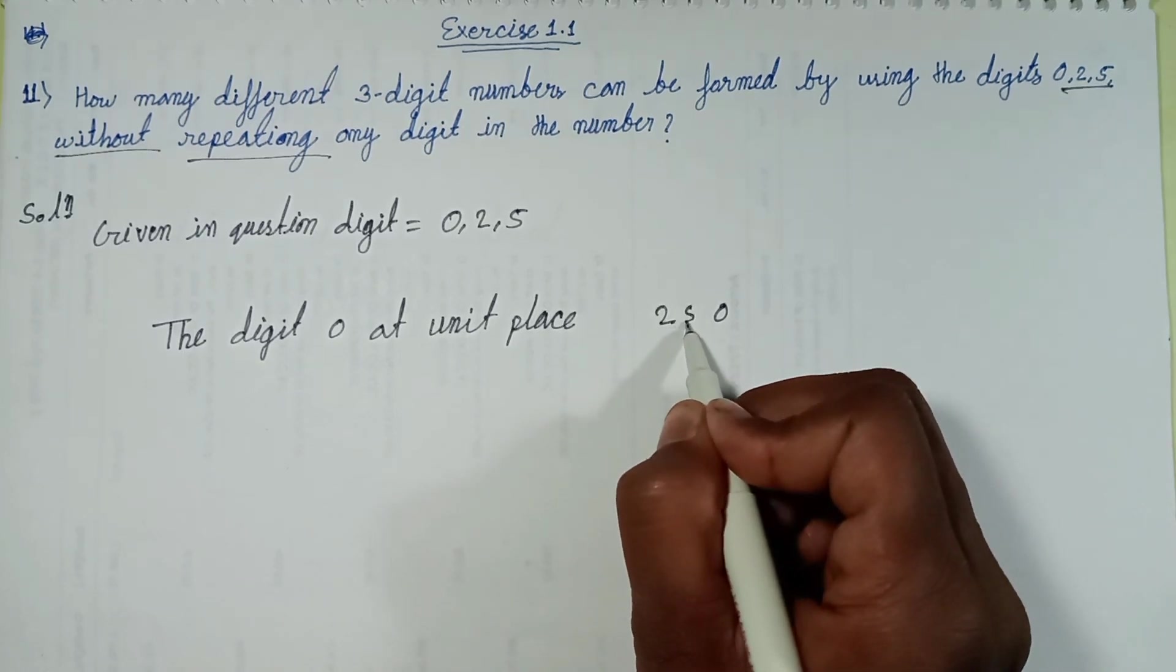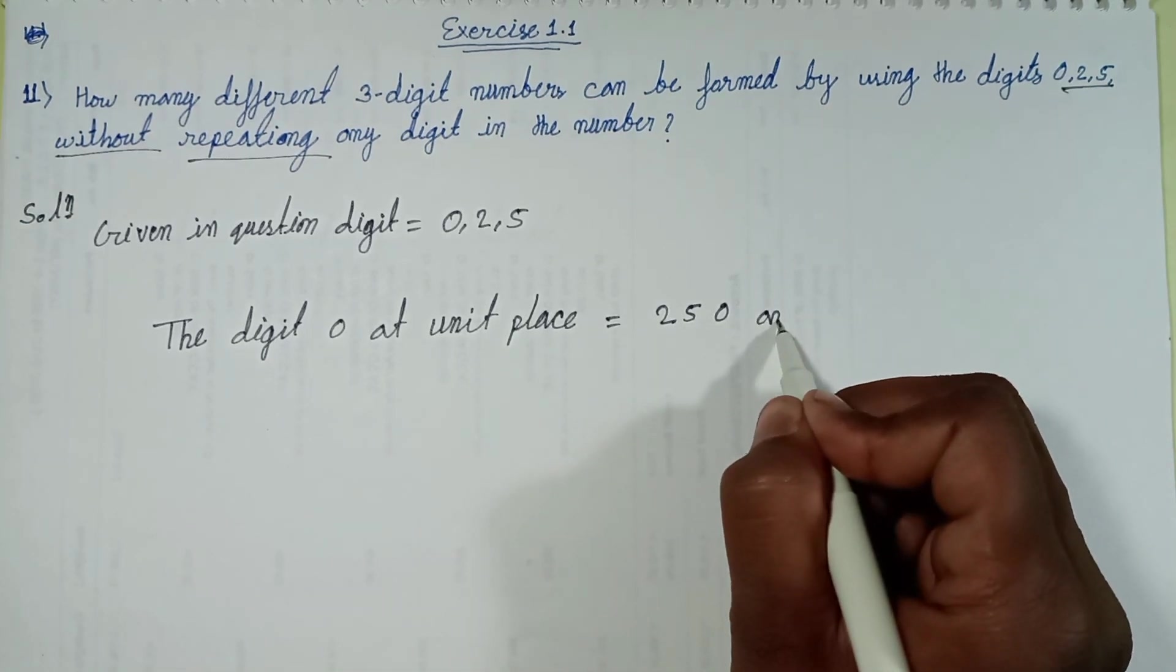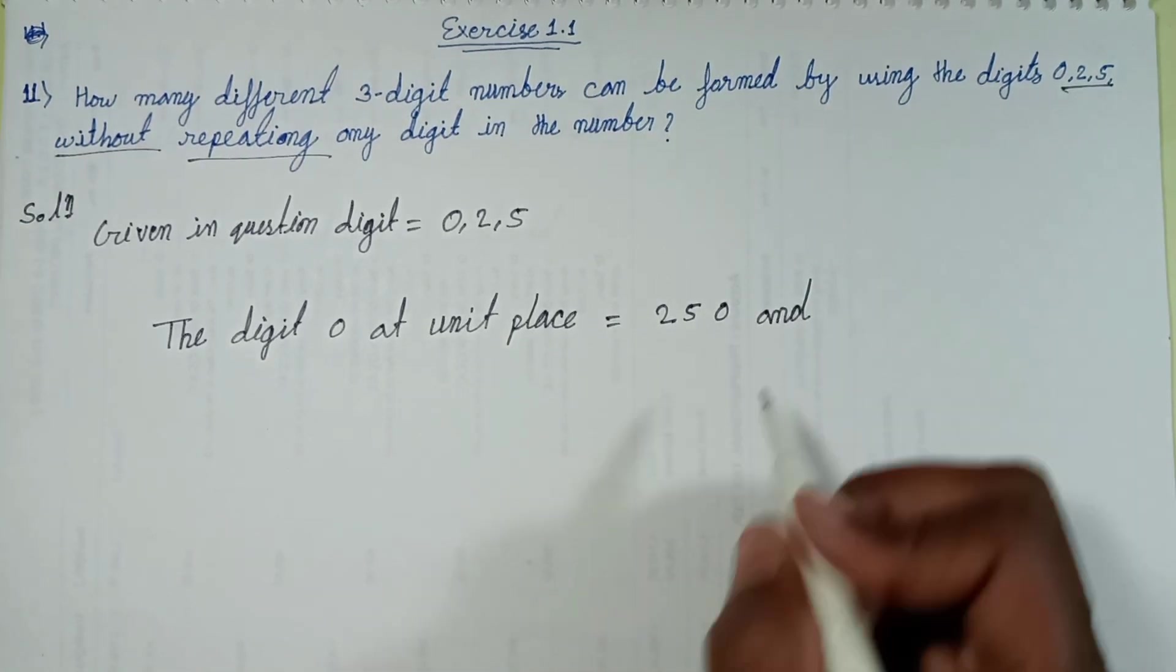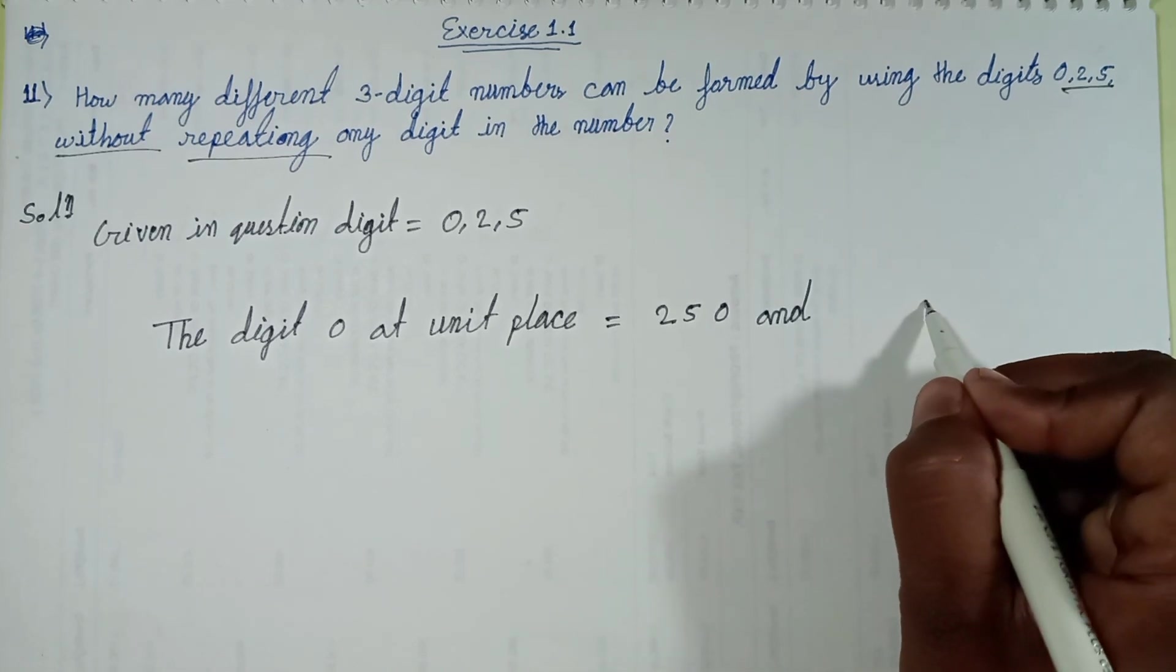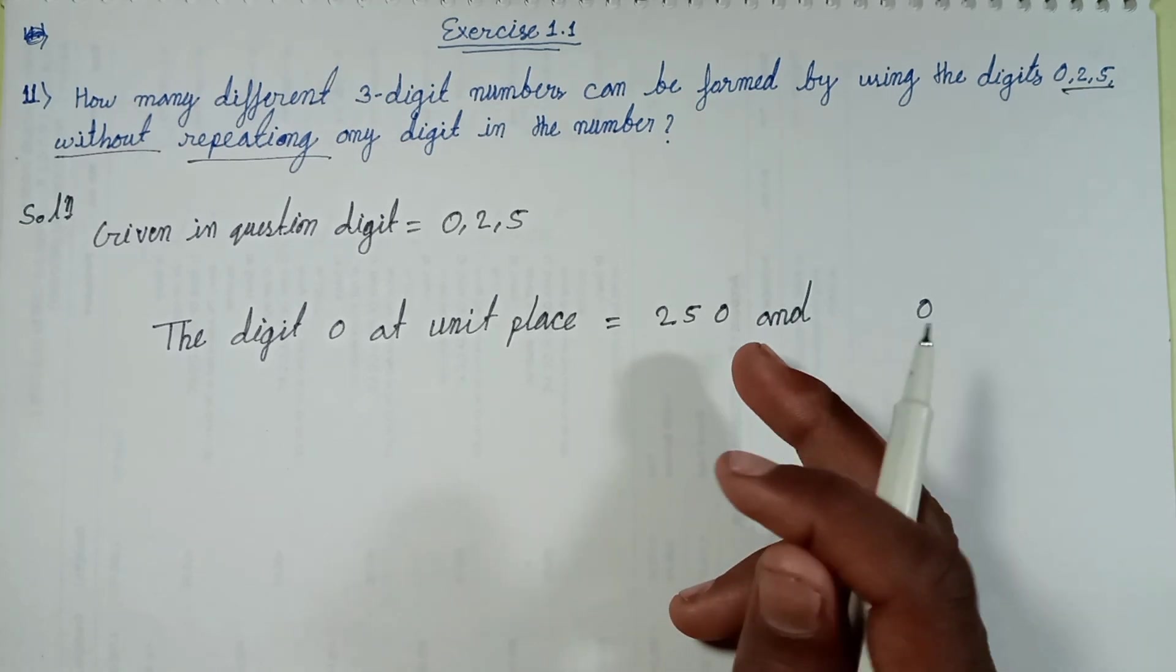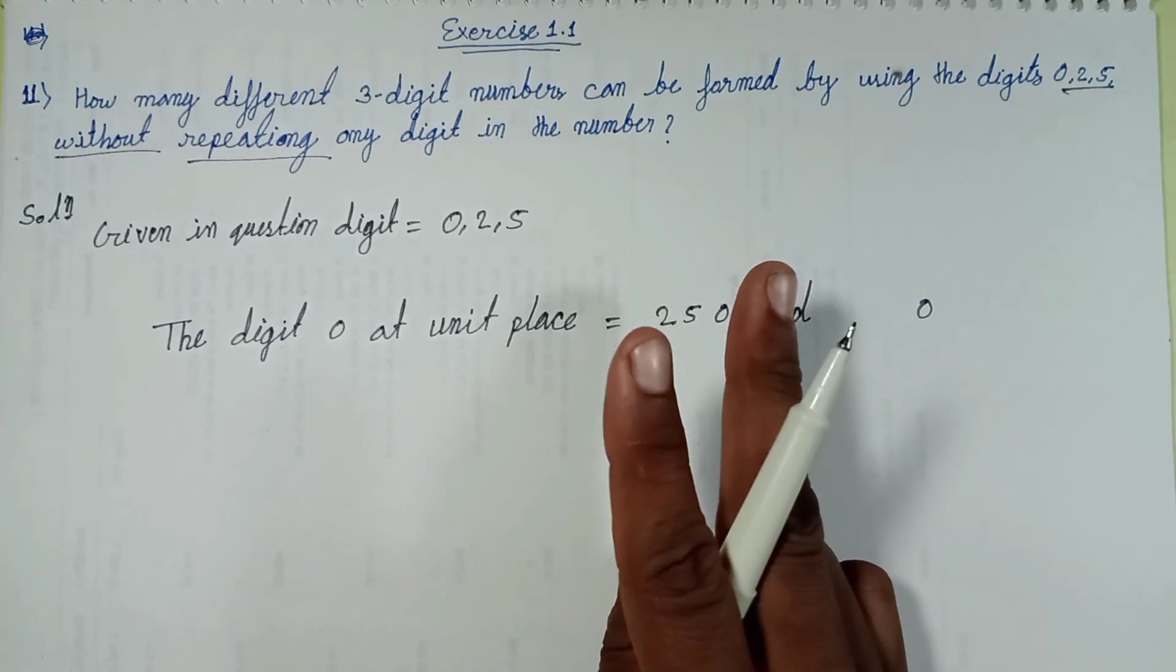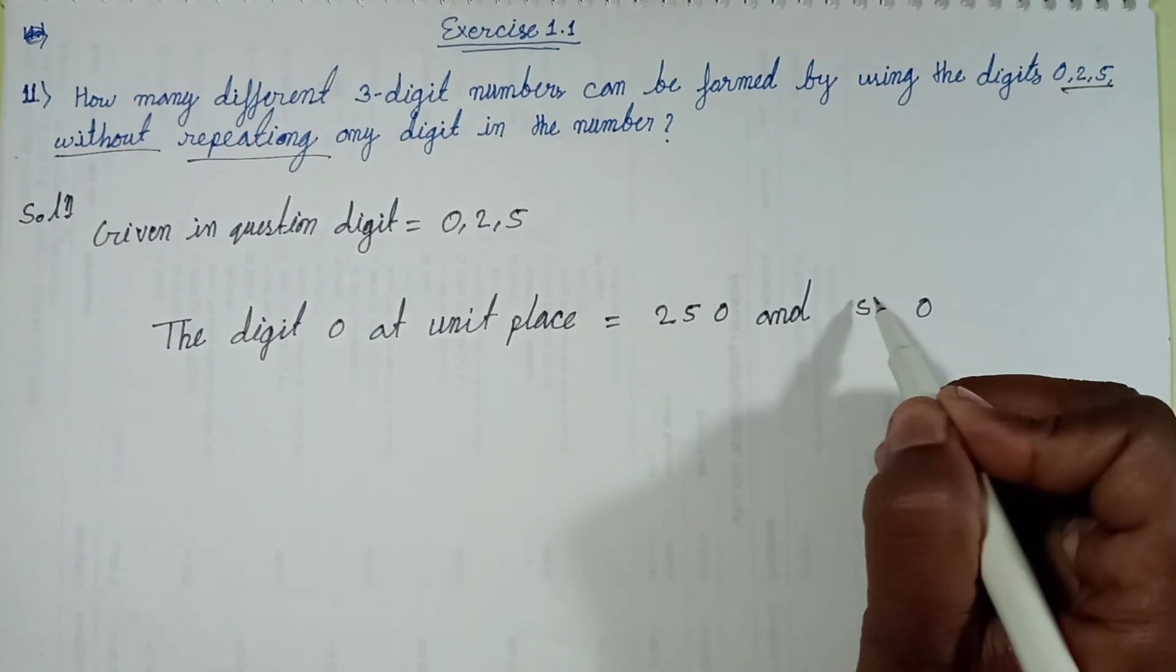2 and 5. First 3-digit number. Second 3-digit number. 2 and 5. 2 and 5 written in reverse form: 5 and 2.